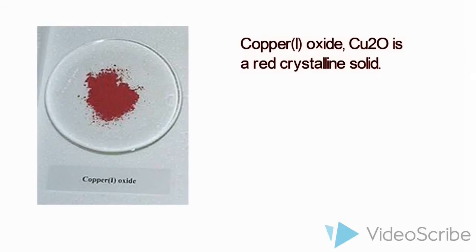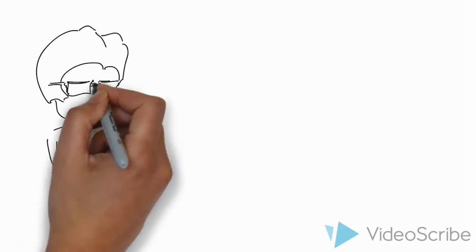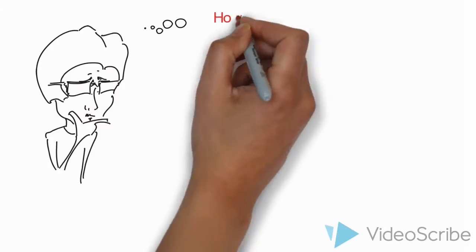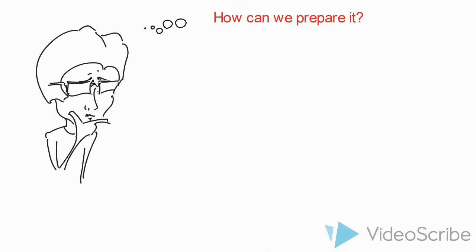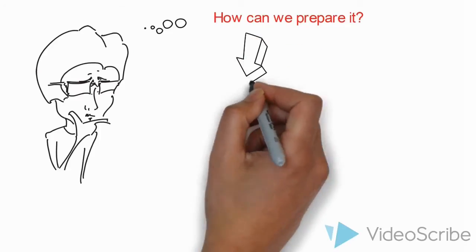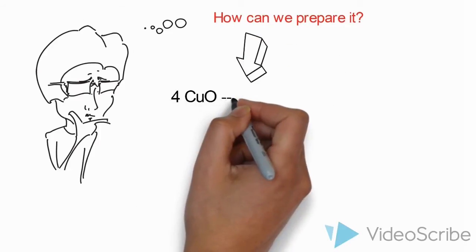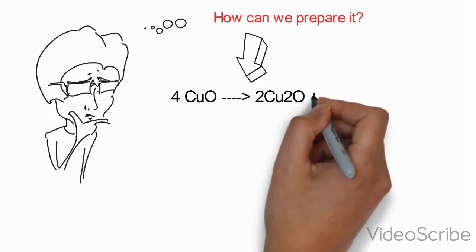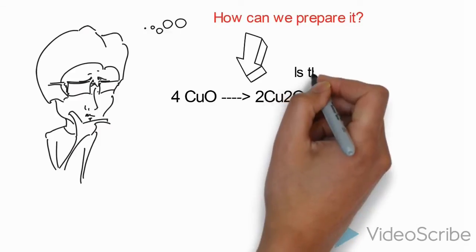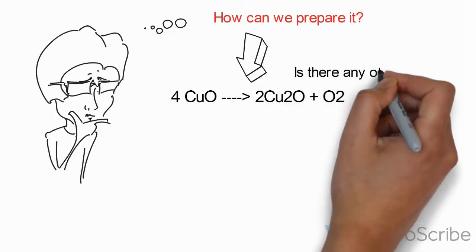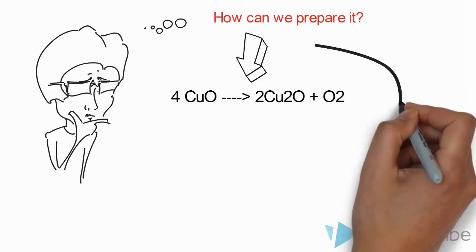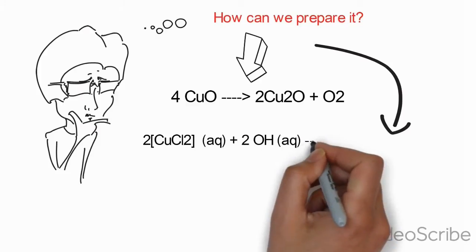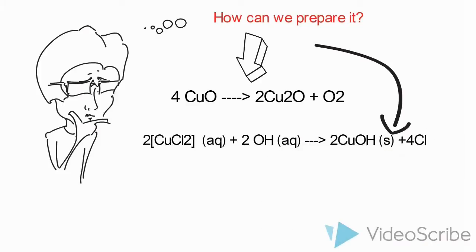Copper 1 oxide is a red crystalline solid. Copper 1 oxide can be prepared by heating of copper 2 oxide. Another way of preparation is when a base is added to aqueous copper 1 chloride containing complex.